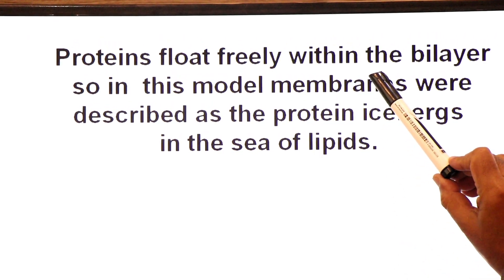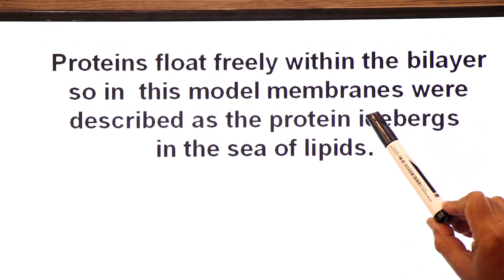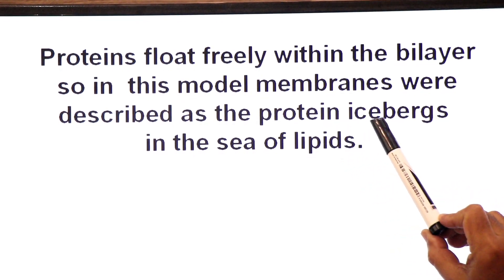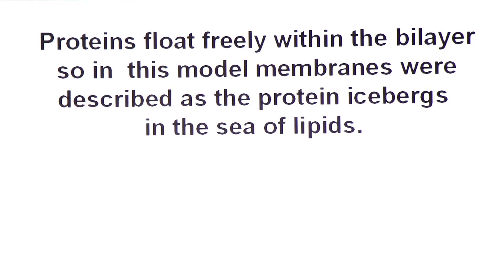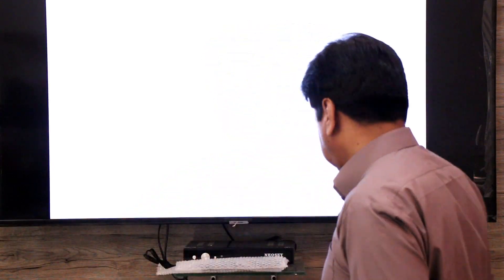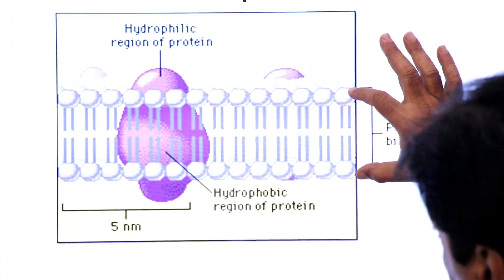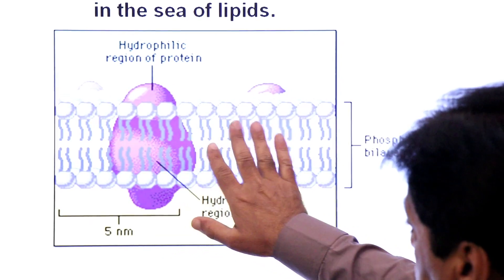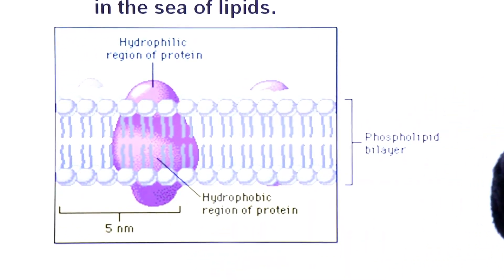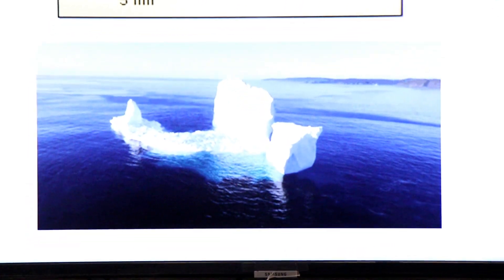Proteins float freely within the lipid bilayer. In this model, membranes were described as 'protein icebergs in a sea of lipid.' When Singer and Nicolson proposed the fluid mosaic model, they used an analogy: just as ice glaciers break into smaller icebergs that float in the ocean, similarly protein pieces float in the lipid bilayer.